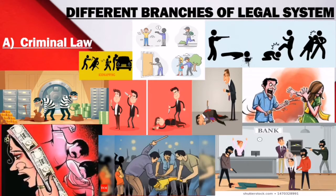Come to page number 60. Here your first topic is: What are the different branches of the legal system? Students, the legal system ko smoothly run karane ke liye two branches mein divide kiya gaya hai — Criminal law and Civil law. Let's understand Criminal law first. Kisi vyakti dwara kiya gaya aisa vyavhar ya behavior ya kariye jaise hamare law mein pahle hi apraadh ya offense define kiya gaya hai.